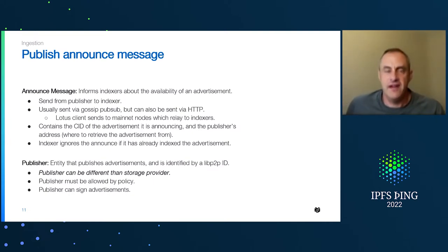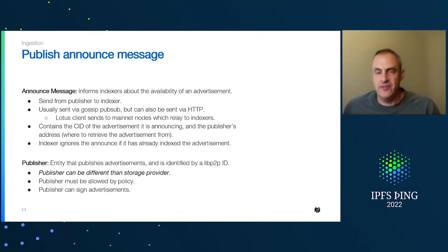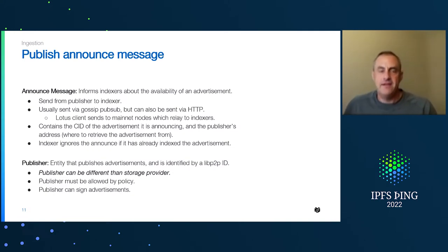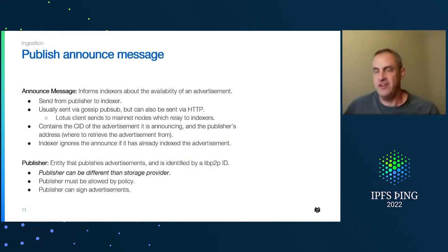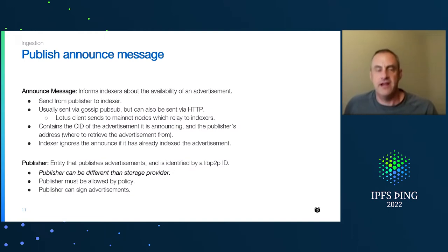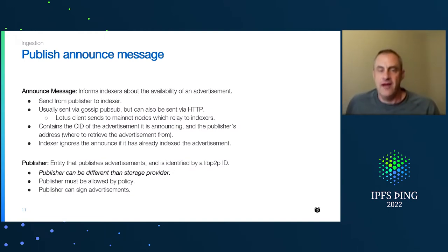The indexers then get this announcement message, which contains the CID of the advertisement being announced along with the publisher's address — where to retrieve the advertisement record from — and that allows them to go get that information. Indexers can also ignore publications if they already happen to have the advertisement, so additional announcements don't cause additional work.